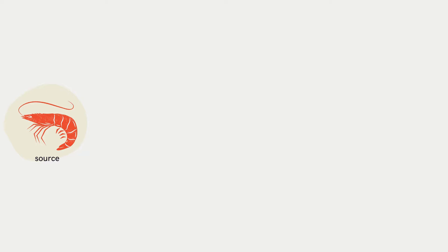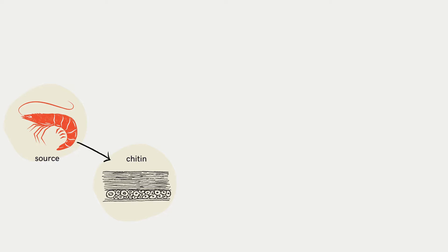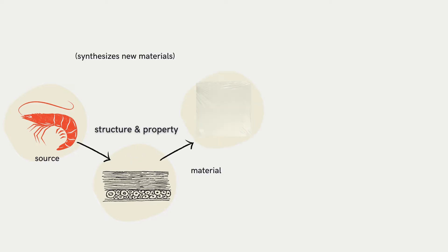Let's start with the shrimp. Its shell contains a material called chitin. It is usually extracted in the form of flakes. But if you study its structure and property, you can turn it into a film. This creation of a new material is under Material Science.